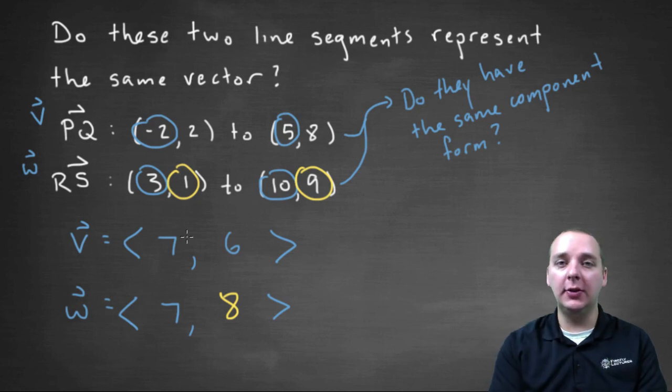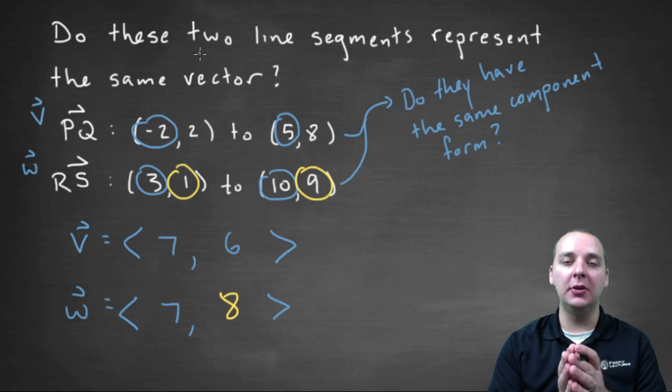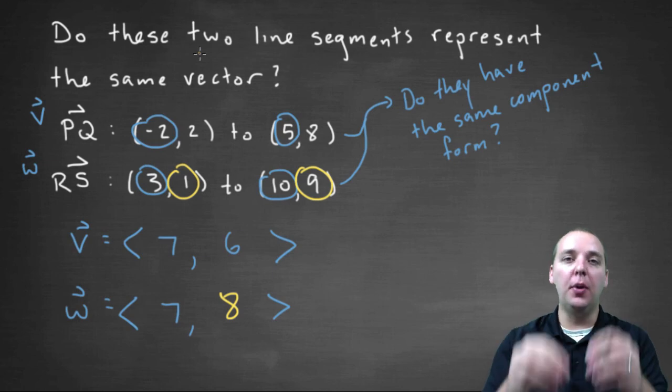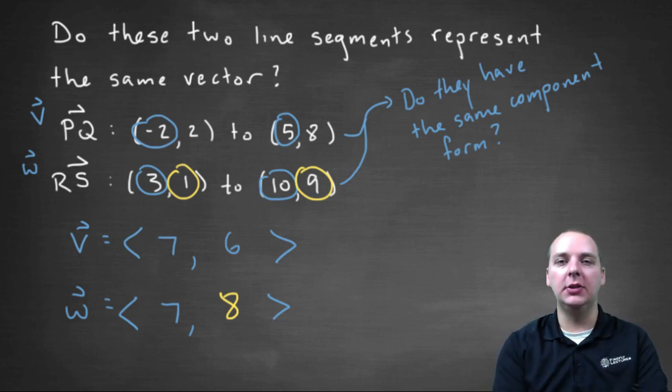So if you're trying to determine if two line segments are represented by the same vector, put them both in component form and see if they match each other.